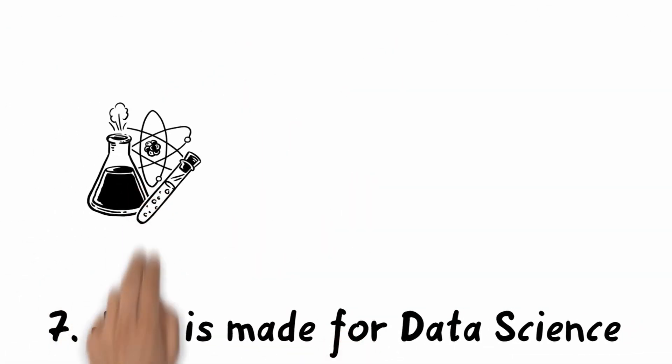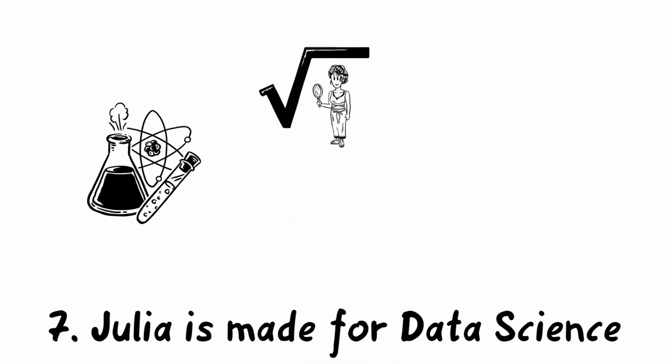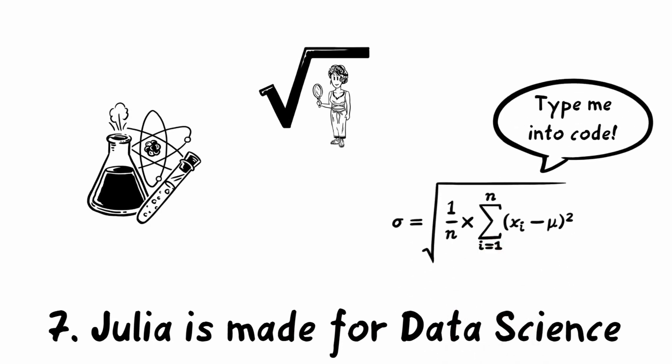7. Julia was designed with data science in mind. So you can use for example signs like square roots or Greek alphabet directly in your code. So you can transfer a mathematic formula one to one into your code, which increases the readability of your code significantly.